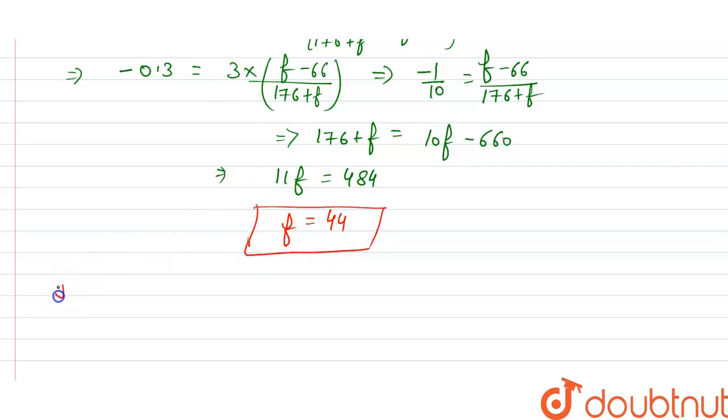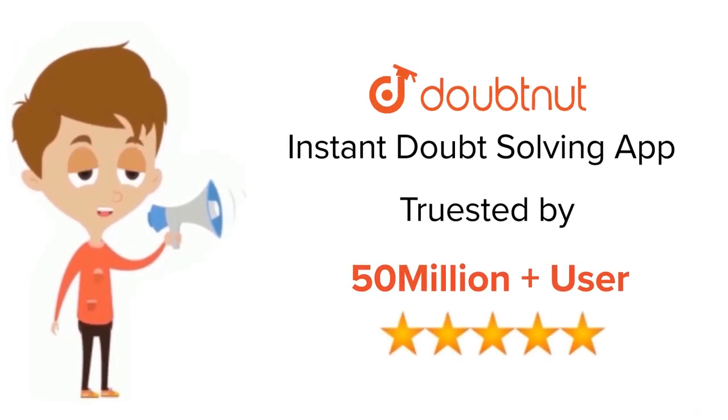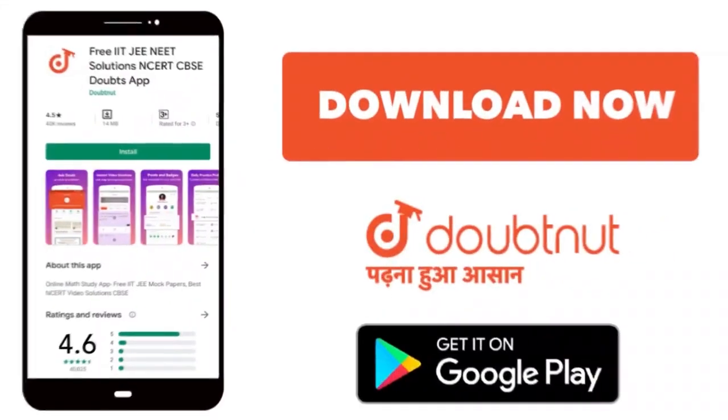So our missing frequency f is equal to 44. That's our answer. Thank you. For class 6 to 12, IIT-JEE and NEET level, trusted by more than 5 crore students, download Doubtnet app today.